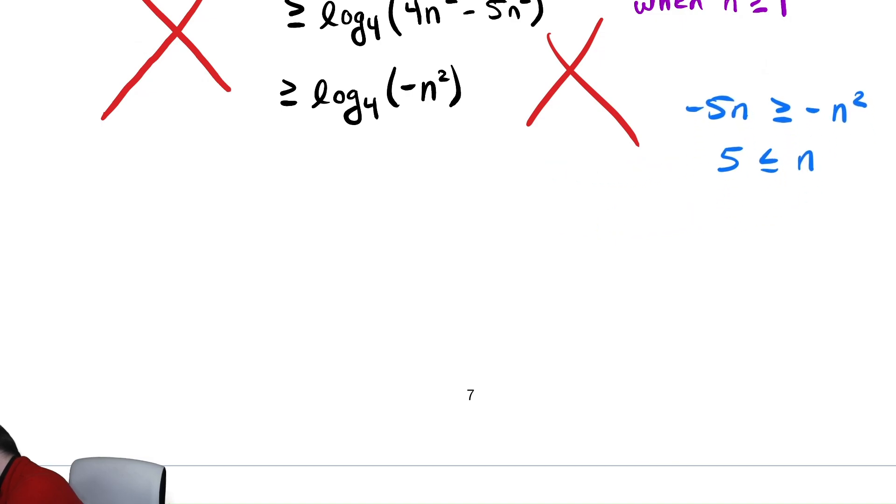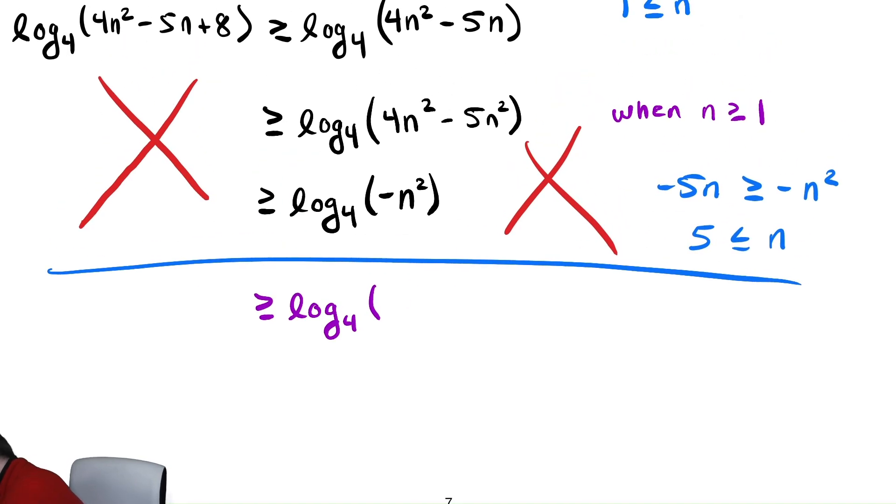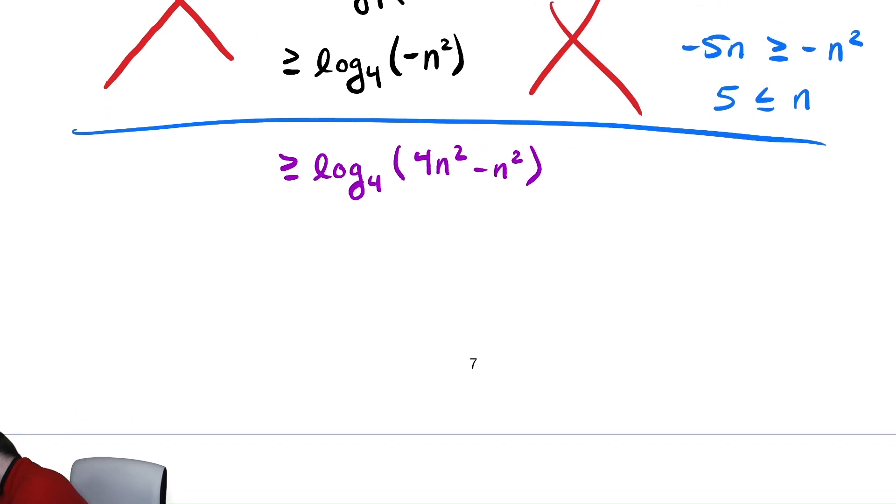Let's move this off to the side, because it's just some scratch work for us. Let's try that instead. So, here in a different color, when bounding below, we are going to replace the negative 5n, this time with negative n², and see how that affects the problem. So, we have 4n², we're replacing negative 5n with negative n². And, this is greater than or equal to now, if we combine our like terms, that becomes 3n².